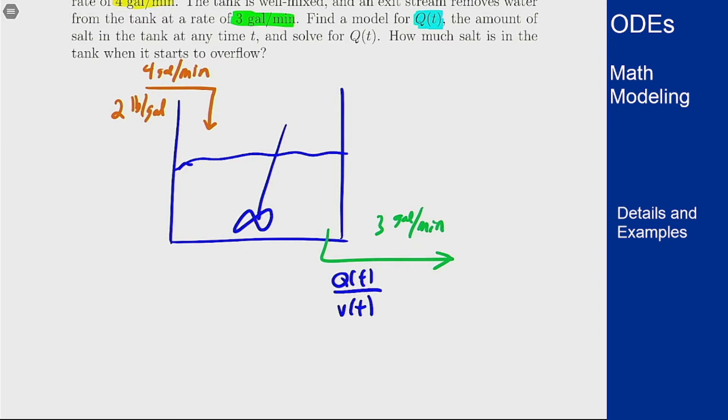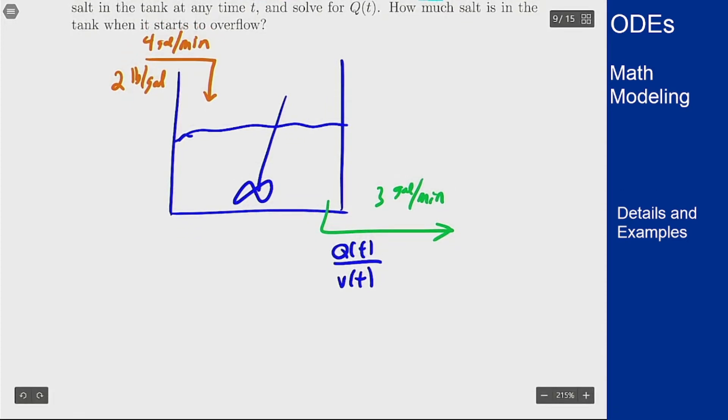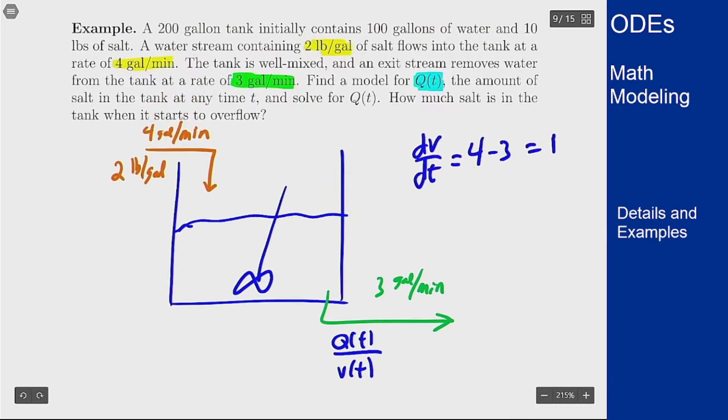Now what is V(t)? We can figure out the equation that V(t) solves using the fact that we know the flow rates into and out of the tank. So we know that dV/dt, or the rate of change of volume, is going to be the 4 gallons per minute in, rate in is 4, rate out is 3, is 1, and we know that our starting point is that V(0) is 100.